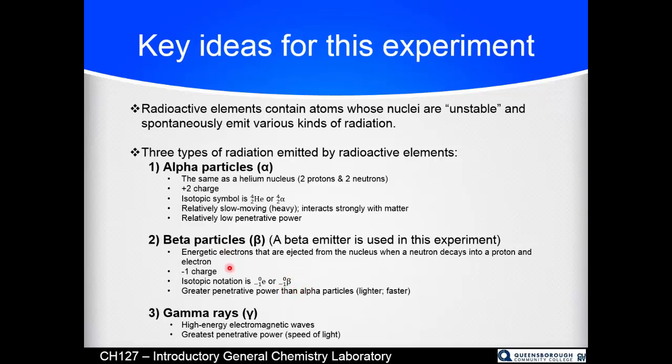Because they are lighter and have less charge in terms of magnitude, not because minus one is smaller than positive two. Minus one absolute value one is less than two. They have greater penetrating power. Lighter is faster, so the beta particle is moving quicker. It's a smaller charge so it can get into material before it chemically interacts with it farther. And so you need better protection for a beta emitter. A beta emitter is what is used in this experiment.